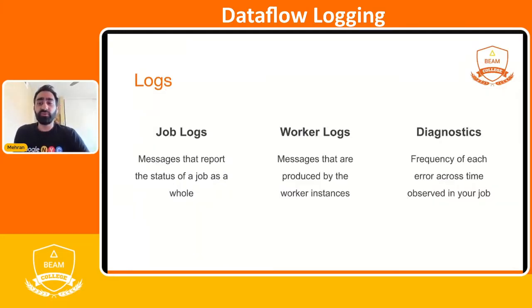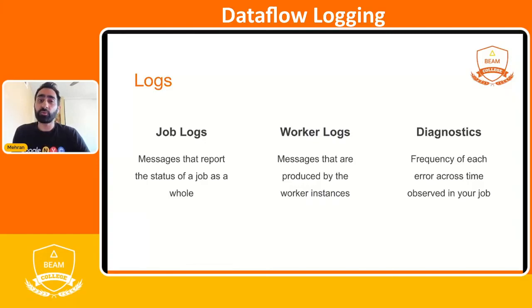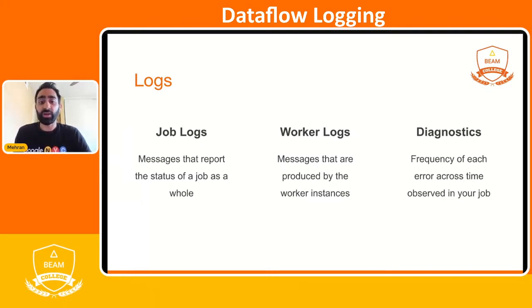Job logs are messages that report the status of the job as a whole. This will also reflect any errors happening on the workers — they'll be propagated to the job — but it also reflects the orchestration of workers and some of the messages that the Dataflow service is propagating to your job.